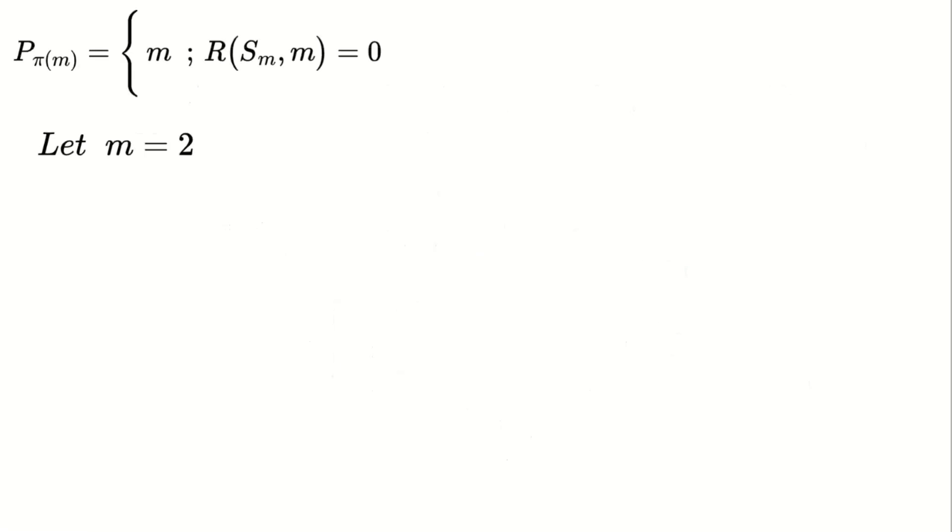Now let's try an example to see how this formula works. Let's start with m equals two. For m equals two, the floor of two over two equals one. So S_2 = {2 choose 1, 2 choose 2}. Since R(S_2, 2) equals zero, as two divides two completely, the prime number is two. This is our first prime number.